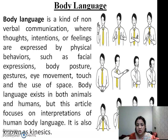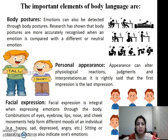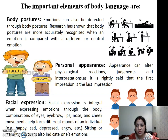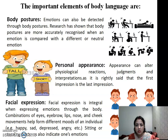Body language is also known as kinesics. Moving to the next slide on the important elements of body language — the first element is body posture. The way you are sitting, standing, lying down, or walking — these are body postures. We have different ways to use our body postures. When standing, most people stand very straight, but some lose their posture and don't know how to stand properly.